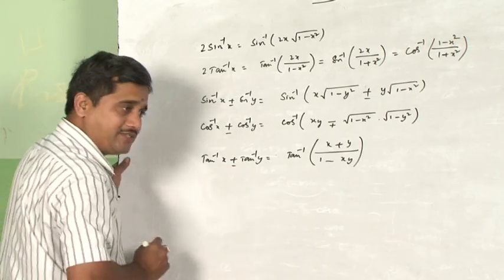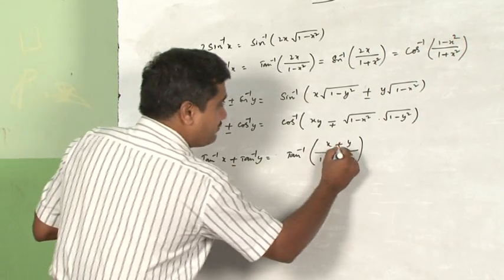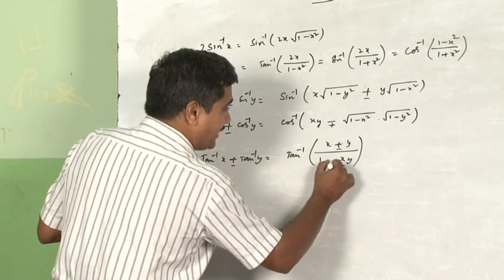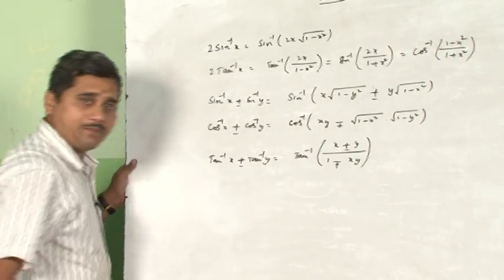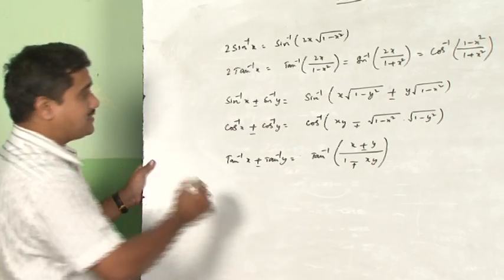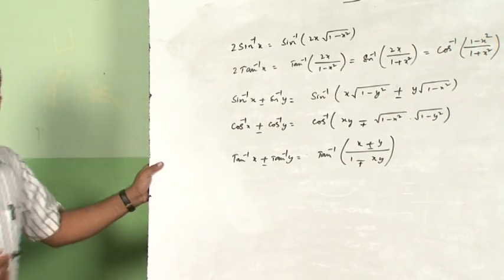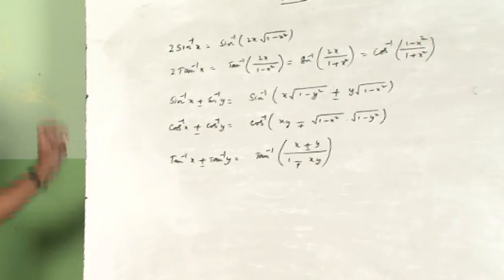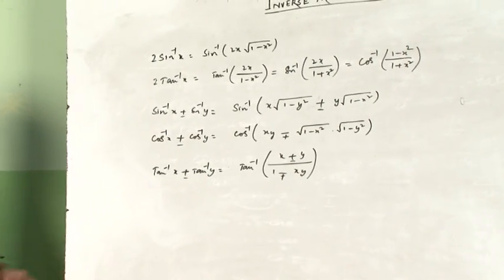If I take sin inverse x minus sin inverse y, then the same rule applies but with a minus sign. Similarly, cos inverse x plus cos inverse y equals cos inverse(xy minus root under 1 minus x square times root under 1 minus y square). If minus joins here, then plus joins there. And tan inverse x plus tan inverse y equals tan inverse(x plus y upon 1 minus xy). If minus joins, then minus here and minus becomes plus. These are the formulas we will now discuss how to prove.